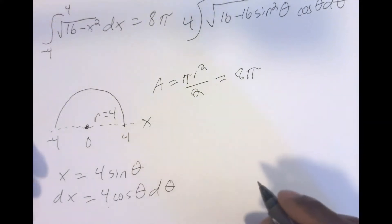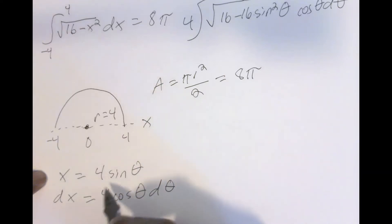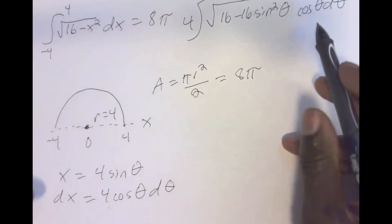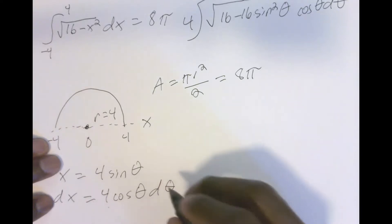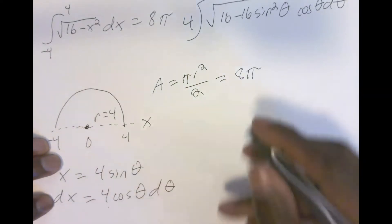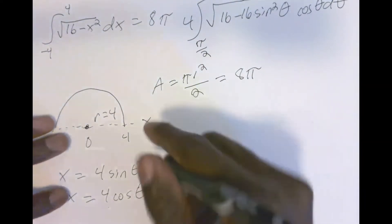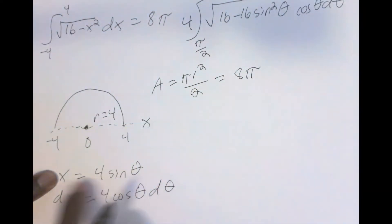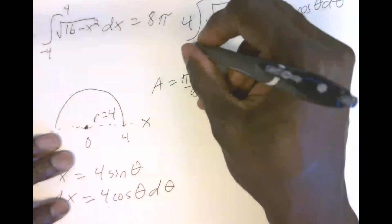When I do this substitution, 16 minus x squared becomes 16 minus 16 sine squared theta, and dx becomes four cosine theta d theta. For the limits: when x is four, sine theta equals one, so theta is the arc sine of one, which is pi over two. When x is negative four, theta is the arc sine of negative one, which is negative pi over two.